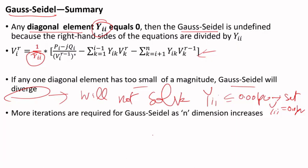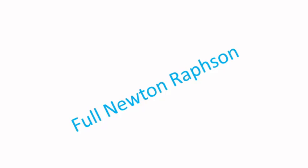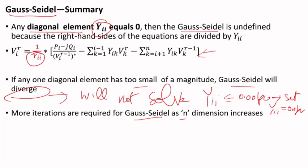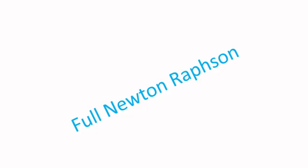More iterations are required as the number of buses increases, making Gauss-Seidel very slow. Some commercial software doesn't even include Gauss-Seidel anymore because it's rarely used. The next video will cover Newton-Raphson.